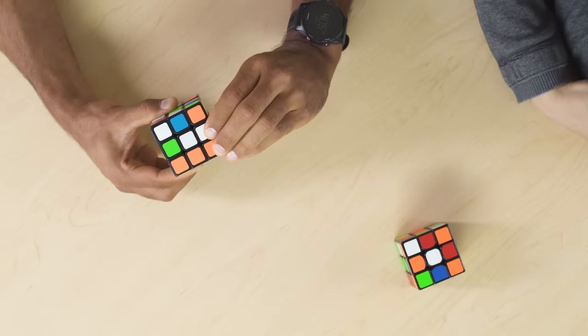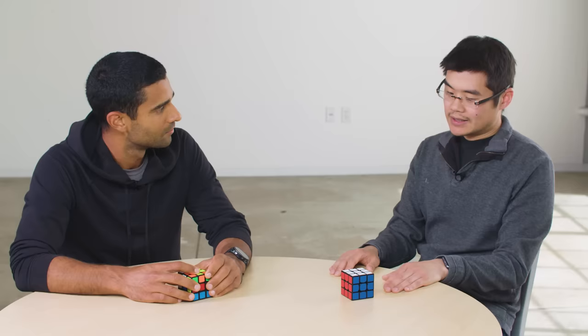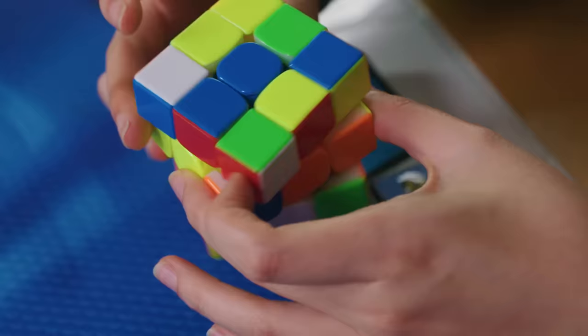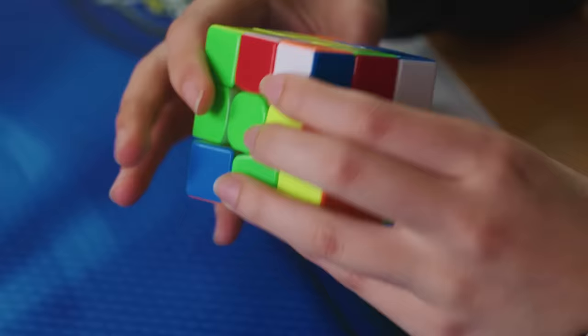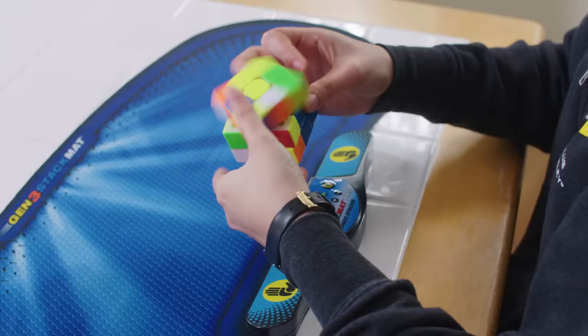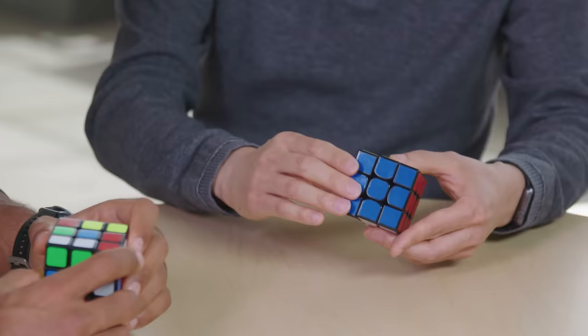And as you might expect, fewer moves can translate to faster solves. The second thing that contributes to how long it takes to solve the cube is how fast you can turn the cube. The fastest speed cubers in the world average around 10 turns per second over the course of an entire solve, and a lot more than that in short bursts. Take this 16-move finishing sequence, for example. It looks like this.